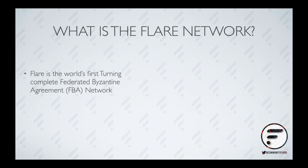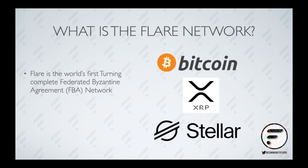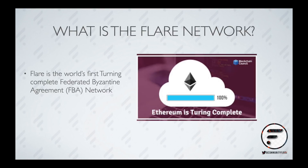Many blockchains we know today, such as Bitcoin, XRP, and Stellar, are Turing incomplete. This is mainly to reduce complexity within the system, which could affect performance in other areas. Ethereum, on the other hand, is built as a Turing complete blockchain.